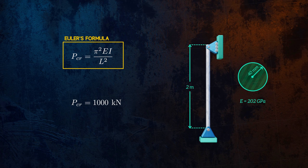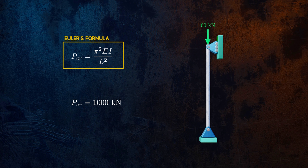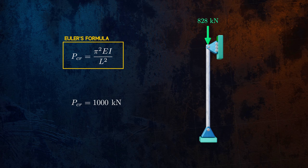This assumes an idealized, perfectly straight column. At the critical buckling load, any small perturbation, whether it's a lateral force or a small imperfection will cause the column to bend.